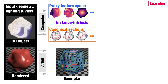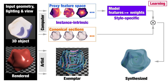Canonical sections serve as a set of bases for representing orientations, and features are a set of scalars encoding the local characteristics. We train a model to convert the features to a set of scalar weights, which serve as coefficients for the canonical sections. The linear combination provides the orientation field for placing strokes on the object surface. This model encodes the style-specific information.